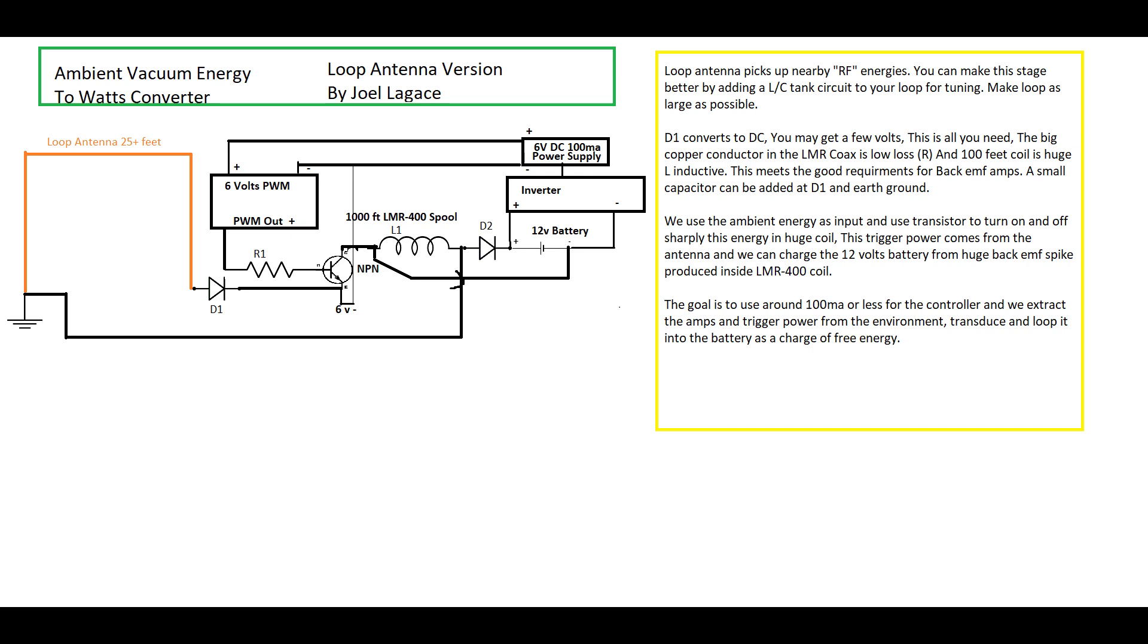So the loop antenna gives us a small form of DC voltage but what we do is we don't use this voltage natively like most people would do in previous circuits you may have seen similar to this. Instead we pulse this small DC voltage into a 1,000 feet LMR 400 coil. It's the spool you don't touch, basically a thousand foot, and you pulse with the help of the NPN transistor the current from the loop antenna.